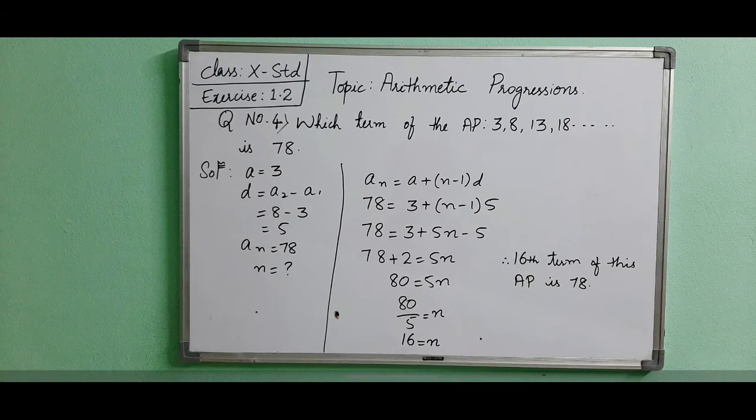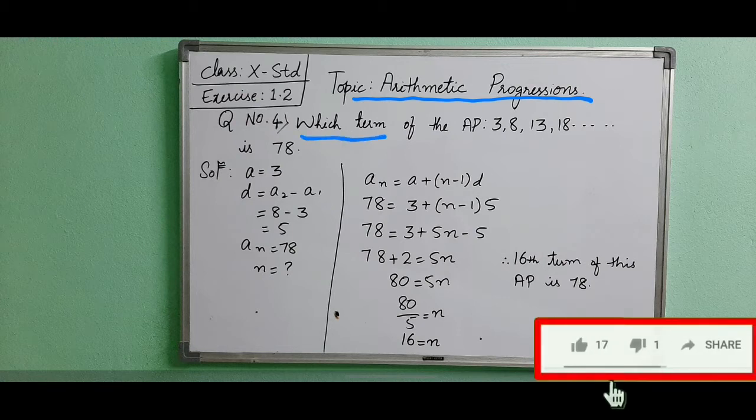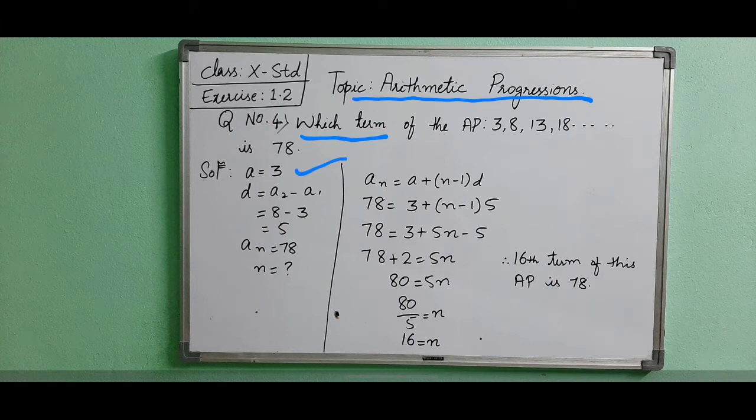Hello everyone. Arithmetic progression question number 4: which term of the AP 3, 8, 13, 18... is 78? Which term means we have to find n here. The first term a is 3, and the difference is